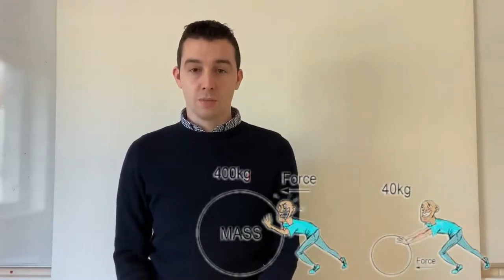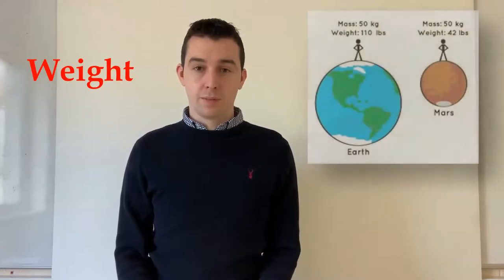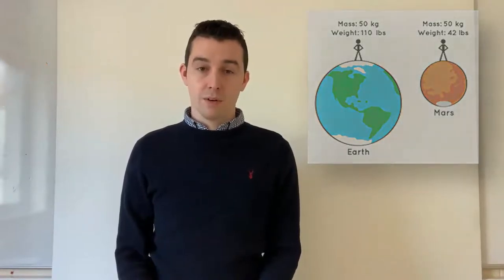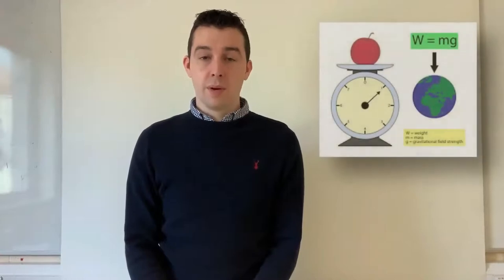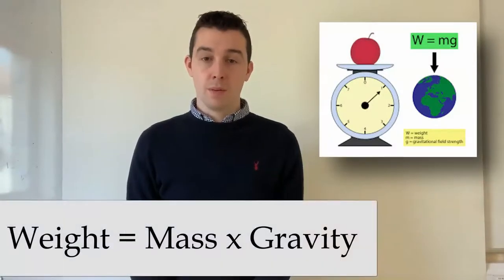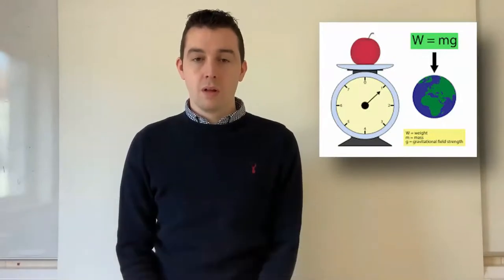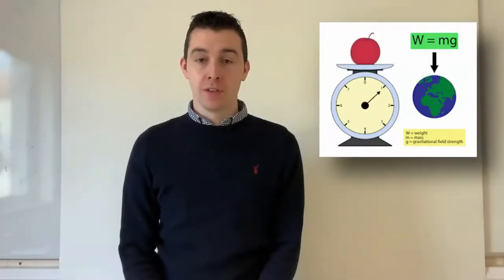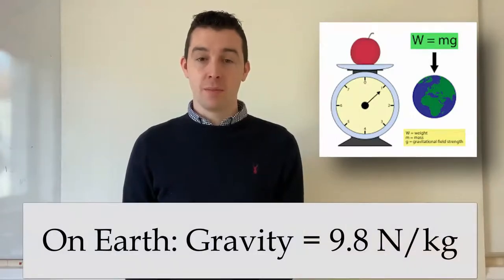For example, the larger an object, the more force is needed in order to get it to move. Weight is the measure of gravity acting upon an object. Sometimes we confuse weight and mass, because we weigh an object in order to get its mass. However, they are not the same. How much something weighs depends on how strong the force of gravity is acting upon it. If you know the mass of something, the weight can be calculated by multiplying the mass by the local gravitational force. The key point is that this calculation only works on the surface of the Earth, where the force of gravity is measured at 9.8 newtons per kilogram.